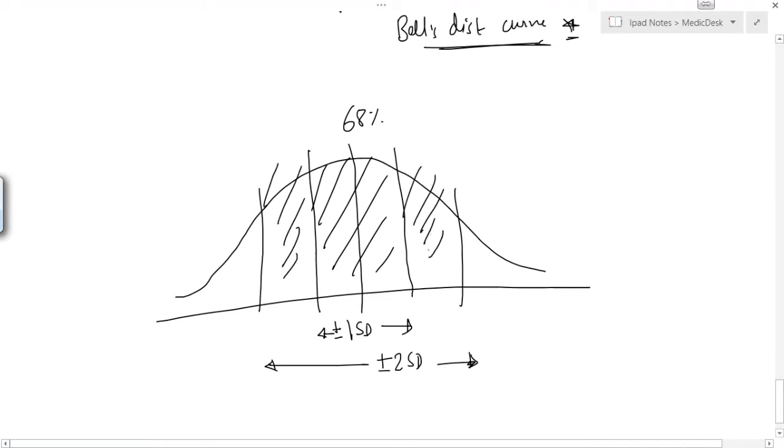And this will be equal to 95%. And this remaining part would be the plus or minus 3 standard deviations and that will be equal to 99% of observations within that confidence interval. This is the confidence interval.